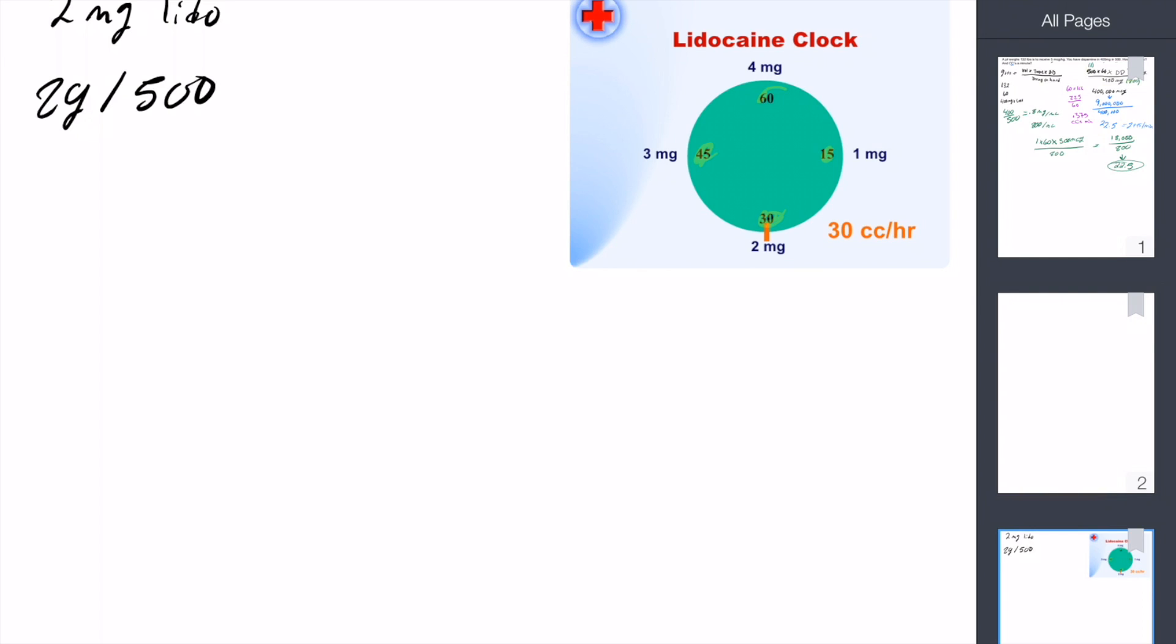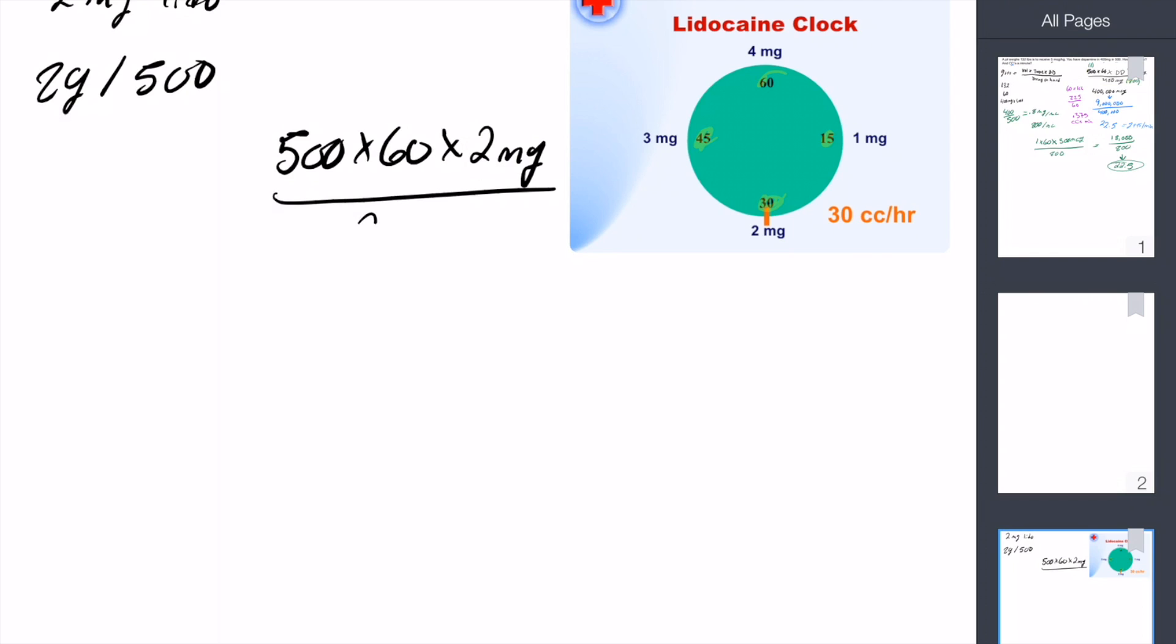We'll leave the little drop symbol out because we should know what that means. So we have 500 times 60 times 2 milligrams, because that's how we administer this medication, over 2 grams. But again, the grams and milligrams don't match up, so we need to convert those grams into milligrams. In this case it's pretty easy, it just becomes 2,000.